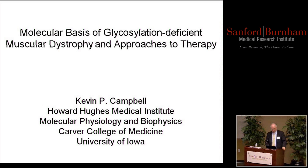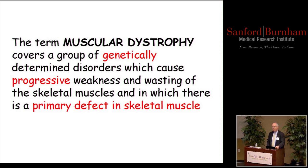Muscular dystrophy is a term that covers a large group of genetic diseases — probably over 40 or 50 different types. The primary defect is in the skeletal muscle cell itself, not in the motor neuron, but it also affects other systems including the CNS. You end up having progressive muscle weakness and wasting in the muscular dystrophies.